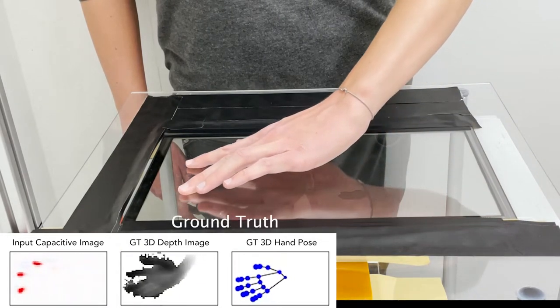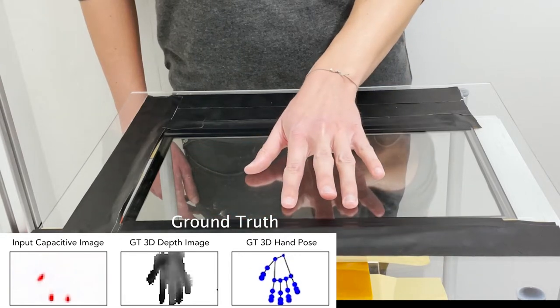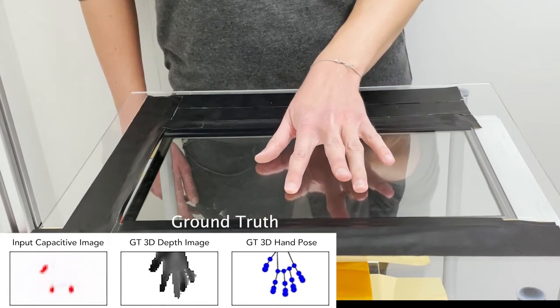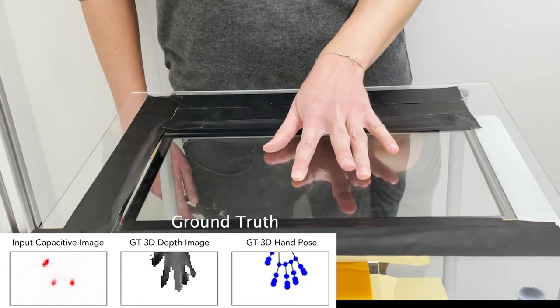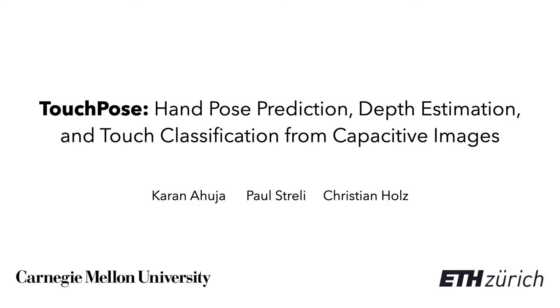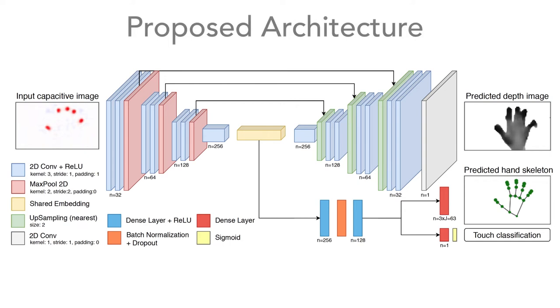However, these 2D coordinates are only the manifestation of the much more complex 3D configuration of the whole hand, which capacitive touch devices so far remain oblivious to. In this work, we introduce TouchPose, a multi-task convolutional neural network for 3D hand pose estimation from capacitive images.